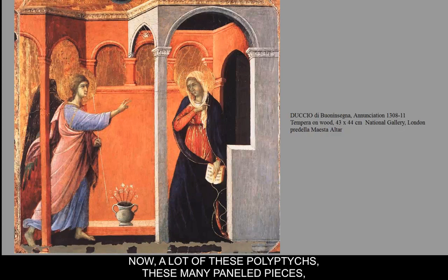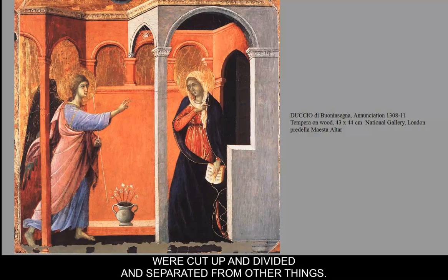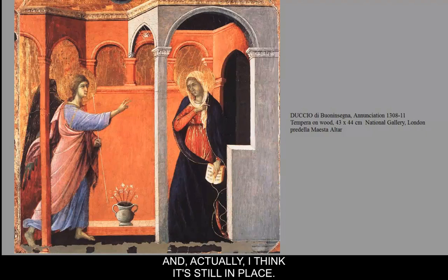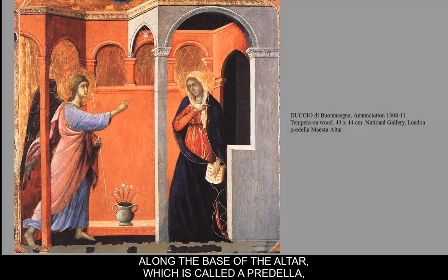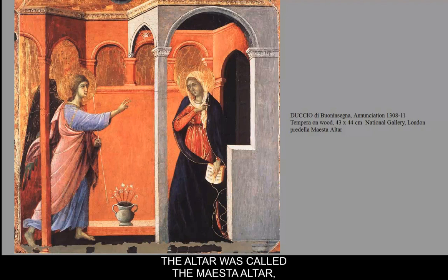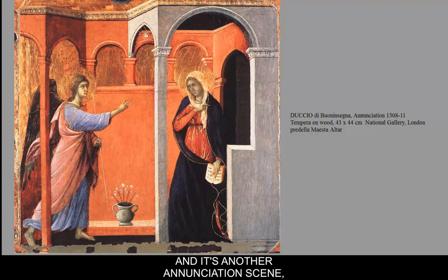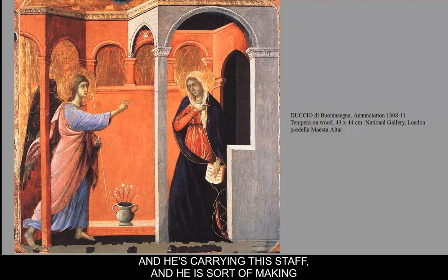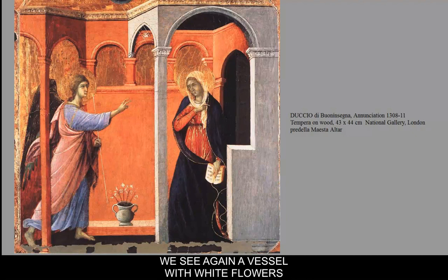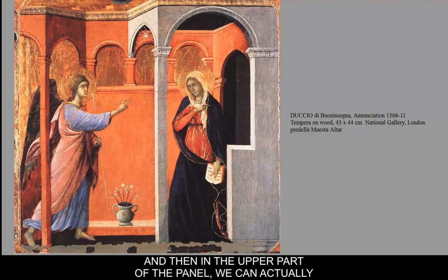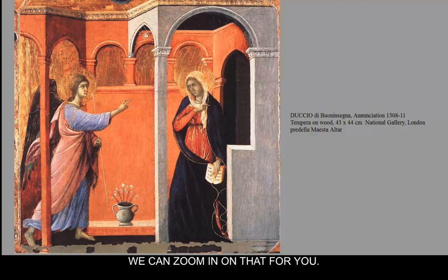A lot of these polyptychs — many-paneled pieces — were cut up and separated. This is part of a larger altarpiece, and it's the bottom panel that runs along the base of the altar, called a predella. The altar was called the Maesta Altar, meaning the majesty altar, done by the artist Duccio — you might see the name Duccio Buoninsegna. It's another Annunciation scene with the same standard iconography: Gabriel coming in with a halo and staff, making a gesture, and Mary regarding him and recoiling slightly. In her hand again is the Bible, and between them is a vessel with white flowers coming out of it, a symbol of Mary being the vessel of God.